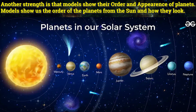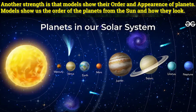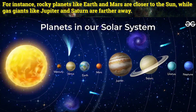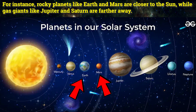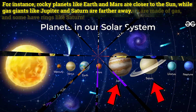Another strength is that models show us the order and appearance of planets — the order of the planets from the Sun and how they look. For instance, rocky planets like Earth and Mars are closer to the Sun, while gas giants like Jupiter and Saturn are farther away.